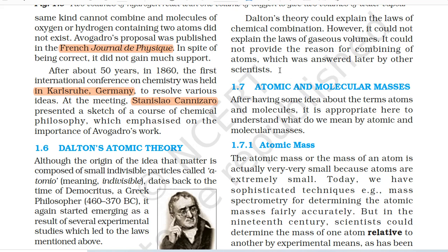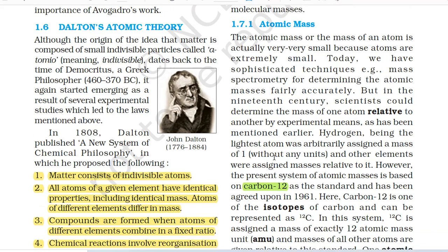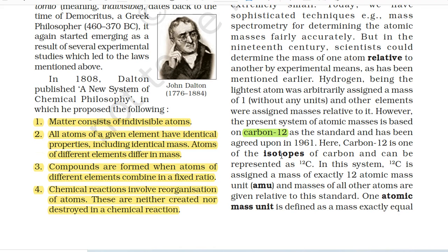1.7 Atomic and Molecular Masses. 1.7.1 Atomic Mass. The atomic mass or the mass of an atom is actually very very small because atoms are extremely small. Today, we have sophisticated techniques — for example, mass spectrometry — for determining atomic masses fairly accurately. But in the 19th century, scientists could determine the mass of one atom relative to another by experimental means. Hydrogen being the lightest atom was arbitrarily assigned a mass of one without any units and other elements were assigned masses relative to it. However, the present system of atomic masses is based on carbon-12 as the standard and has been agreed upon in 1961. Carbon-12 is one of the isotopes of carbon and is assigned a mass of exactly 12 atomic mass units.